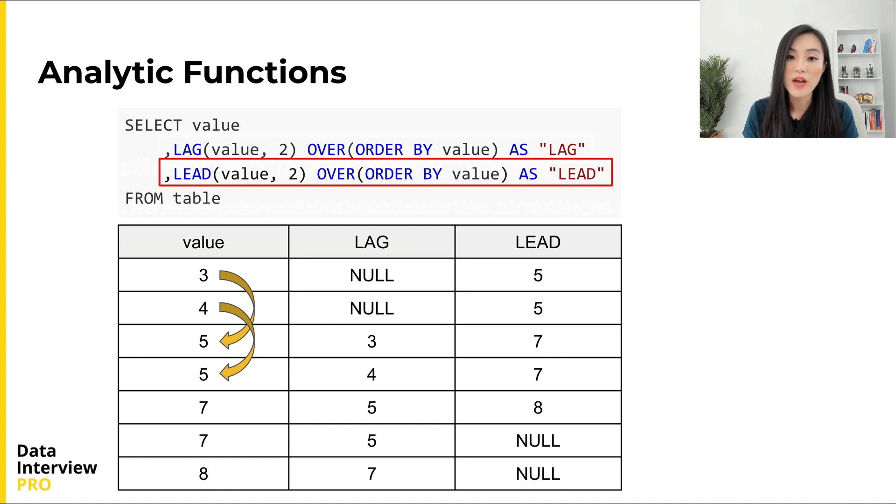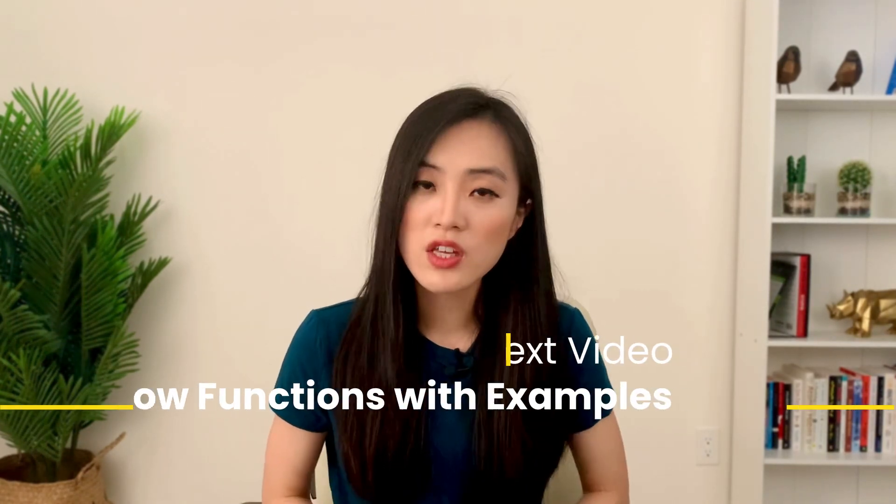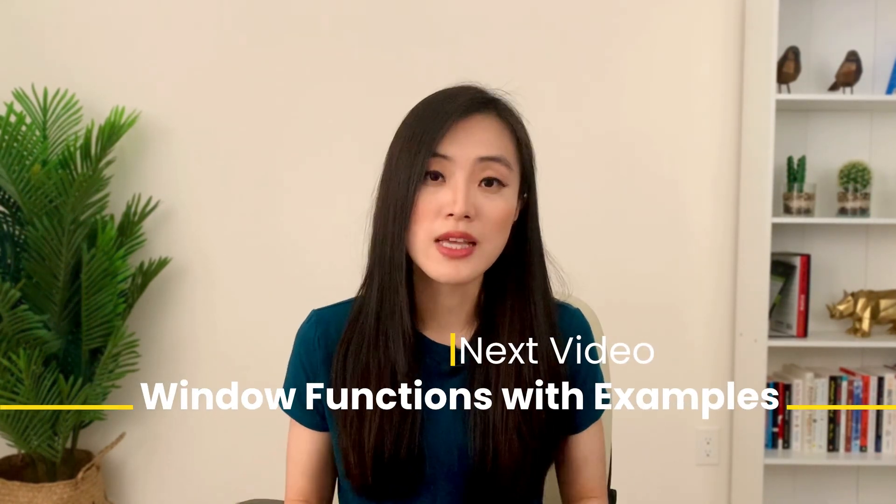Because we did not specify a default value, the value is NULL if it does not exist. Alright, we have talked about a lot regarding window functions — covering three ways to define window frames and three types of functions. I hope this video gives you a clear idea of what a window function is and how to write one. But this overview alone is not enough — we need to know how to use window functions to solve SQL problems. So in the very next video, I will walk you through some example questions and answers using window functions. Stay tuned — I will see you soon.